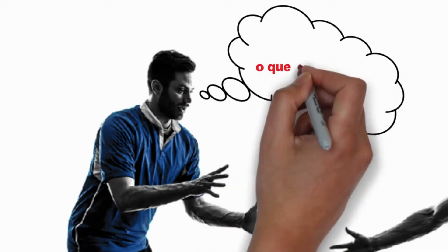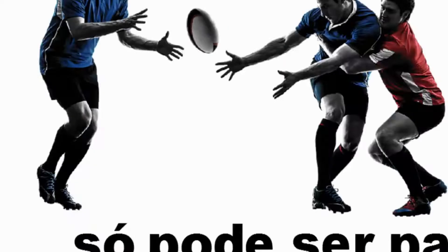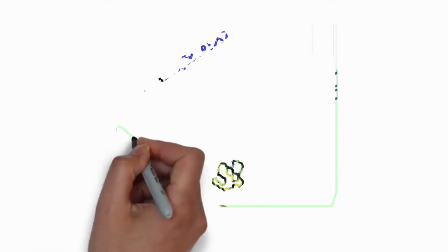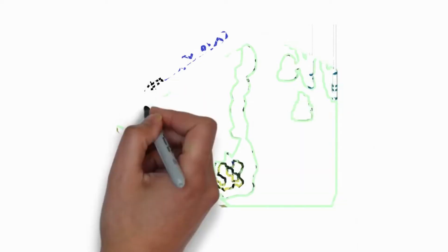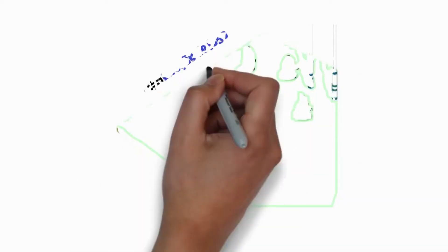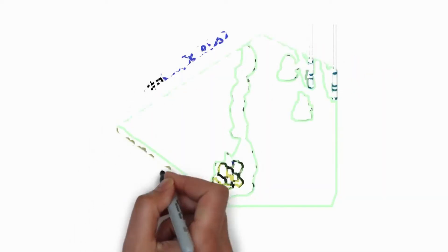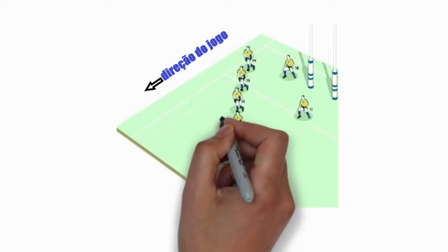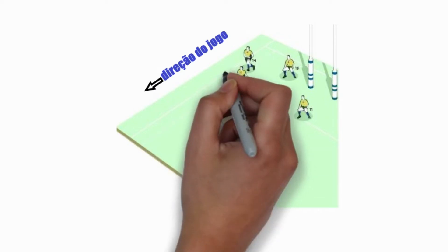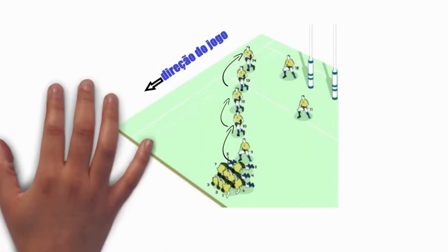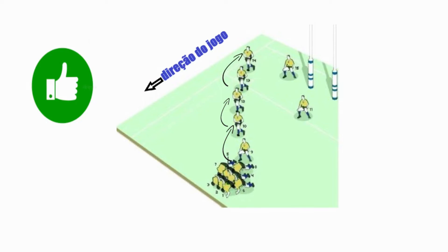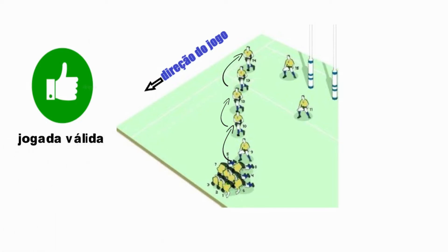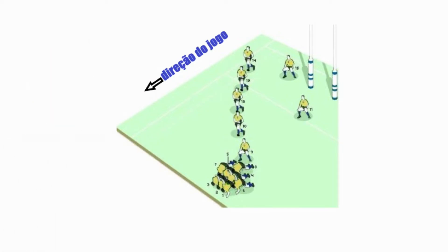O que configura um passe para trás? Um passe para trás não está relacionado com a posição do corpo do atleta dentro do campo, e sim para o lado em que a bola é lançada. Qualquer bola lançada em direção à defesa do time que esteja com a posse da mesma é considerado um passe para trás, logo é uma jogada válida.